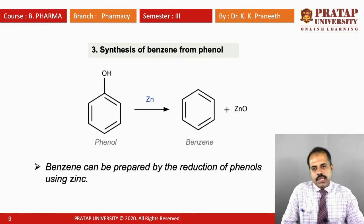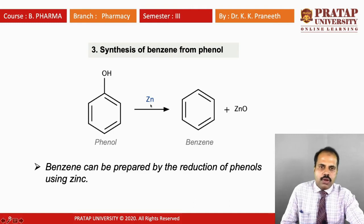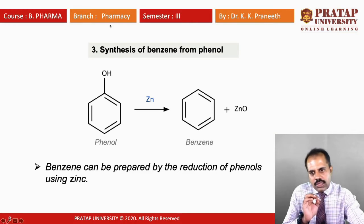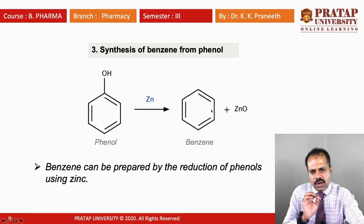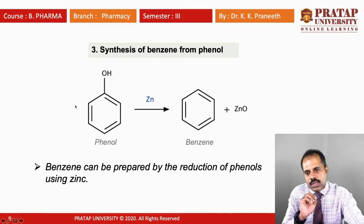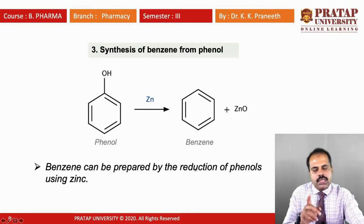The third method: benzene can be prepared from phenol by a reduction reaction using zinc. Zinc is used for reduction purposes. Reduction means addition of hydrogen, and removal of oxygen is also called reduction. Here, oxygen is removed from phenol — the oxygen goes to zinc — and hydrogen is added to the benzene ring. So benzene can be prepared by reduction of phenol using zinc.